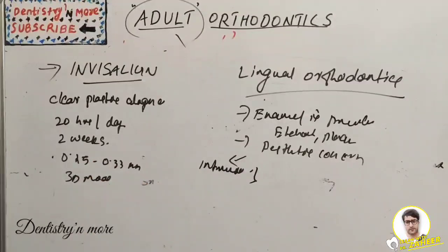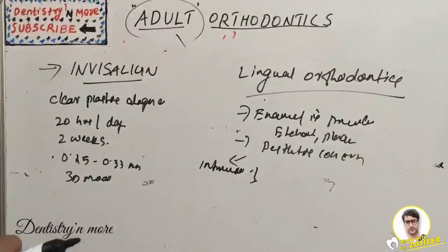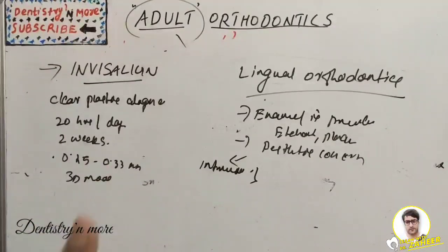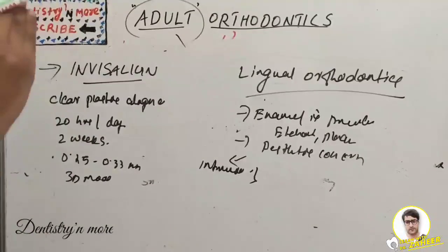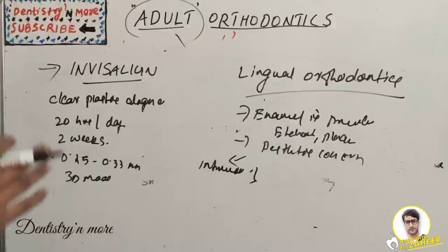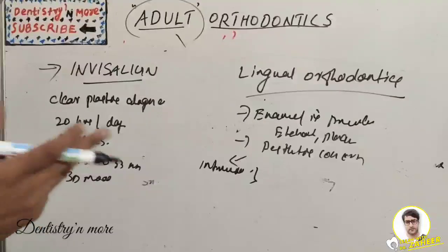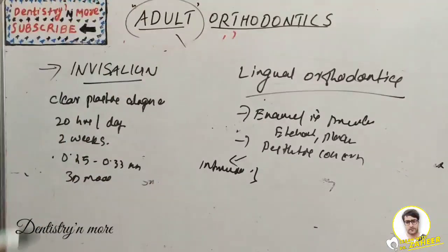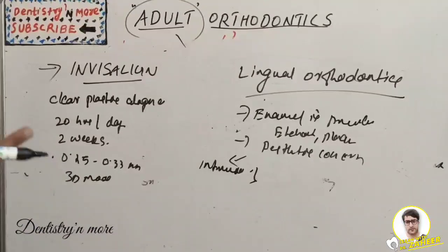Invisalign and lingual orthodontics are each vast topics; this was just a brief introduction. To summarize, adult orthodontics covers indications, contraindications, problems adult patients face, and three main procedures: adjunctive, comprehensive, and surgical, along with newer techniques. Thank you.